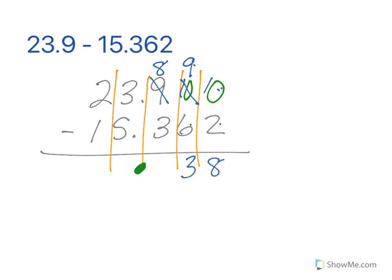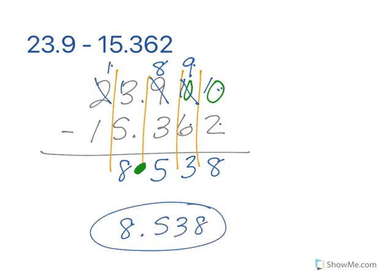9 minus 6 is 3. 8 minus 3 is 5. 3 minus 5, I have to borrow there. 13 minus 5 is 8. So 8 and 538 thousandths. Because of the end here, 1 minus 1 gives us 0.